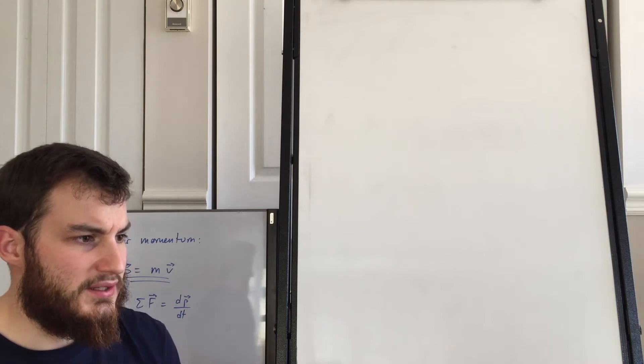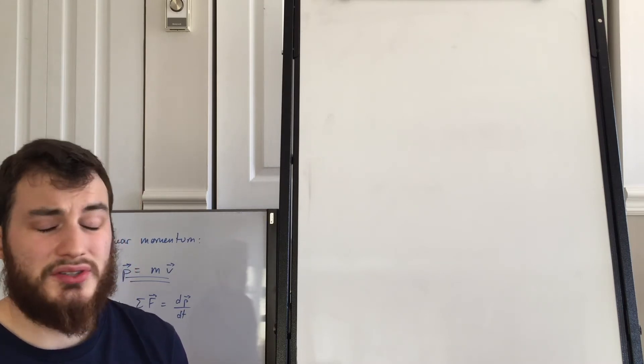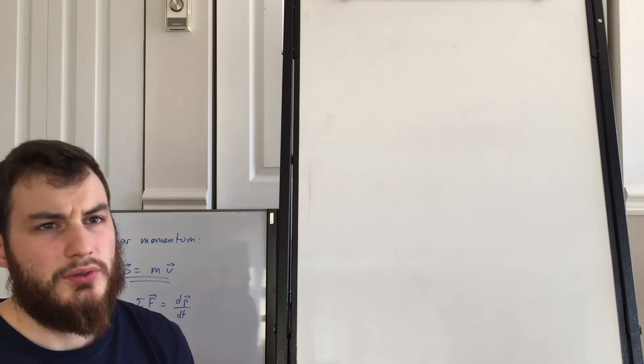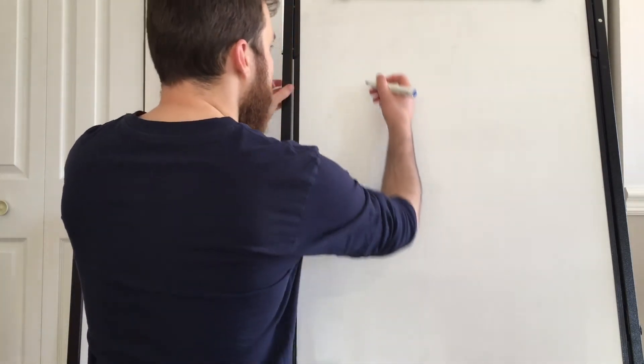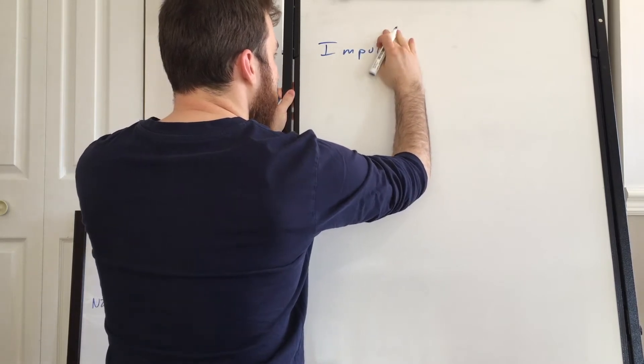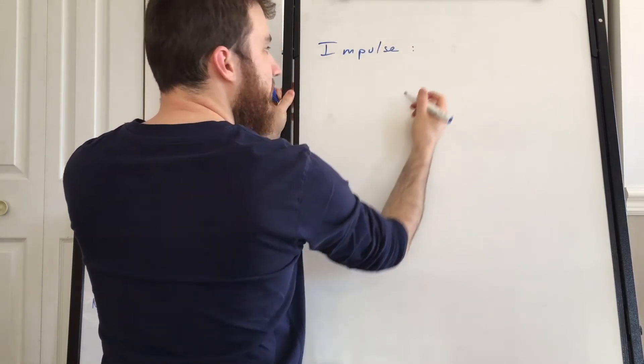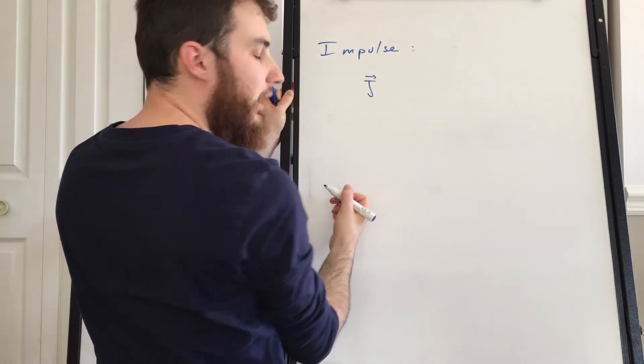The concept before we do that is the impulse. The impulse is really just the change in linear momentum. It's usually talked about when we have a collision, when we have a short span of time, but that's really just it, right? The impulse, for whatever reason, its symbol is J, capital J,